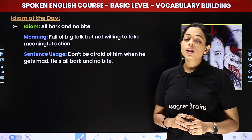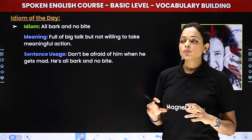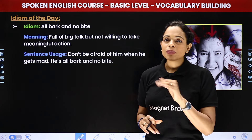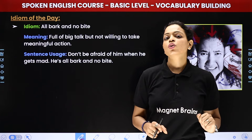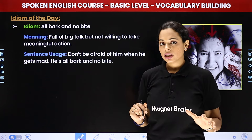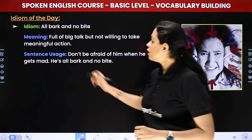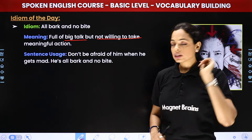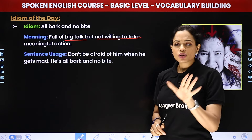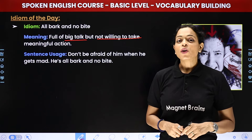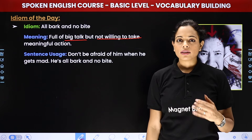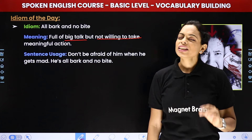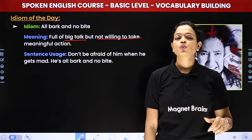The next is the idiom: 'all bark and no bite'. Woh jo bolte hai na — yeh jo baadal hai woh sirf garajte hai, barasate nahi. Iska matlab ki yeh log sirf bolte hai, karte kuch nahi. Jaisi kutta hai sirf bhonkta hai, kaata nahi. So 'all bark and no bite' ka matlab hota hai — full of big talk but not willing to take meaningful action. Bari bari baatein, karna kuch nahi. 'Don't be afraid of him when he gets mad — he is all bark and no bite.' Toh jaisi aapke boss hai ya phir koi bhi insaan jo bohat gussa kare — aap jante ho ki woh sab gussa karata hai, kuch bolega nahi — tab aap kya bologe? Do not worry, he is all bark and no bite.